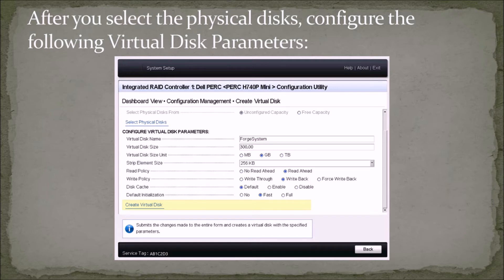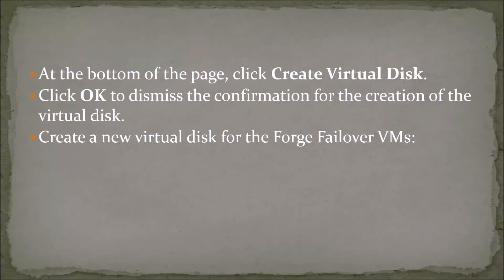Virtual disk size — specify 300 as the size for the Forge system disk; the recommended size is 300 GB. Virtual disk size unit — specify GB. Strip element size — select 256 KB. Read policy — select Read Ahead. Write policy — select Write Back. Disk cache — select Default. Default initialization — select Fast. At the bottom of the page, click Create Virtual Disk. Click OK to dismiss the confirmation for the creation of the virtual disk.